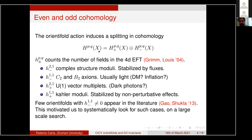The geometrical properties of the compactification space fix properties of the low energy four-dimensional effective theory. The orientifold action induces a splitting of the homology of the Calabi-Yau: H^{p,q}(X) splits into even and odd parts. The dimensions of the even and odd homology groups count the number of fields of a given type: H^{2,1}_{-} gives complex structure moduli stabilized by fluxes, H^{1,1}_{+} gives Kähler moduli stabilized by non-perturbative effects, H^{1,1}_{-} gives C₂ and B₂ axions — interesting as dark matter or inflaton candidates — and H^{1,1}_{+} gives U(1) vector multiplets.